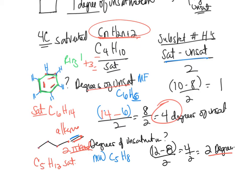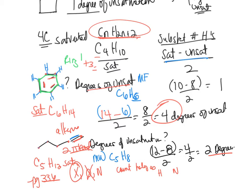If you have heteroatoms, see page 336. For halogens, oxygens, and nitrogens: ignore oxygen (it doesn't change your count); count a halogen as a hydrogen; and count a nitrogen as adding half a carbon — because of the valence it contributes.